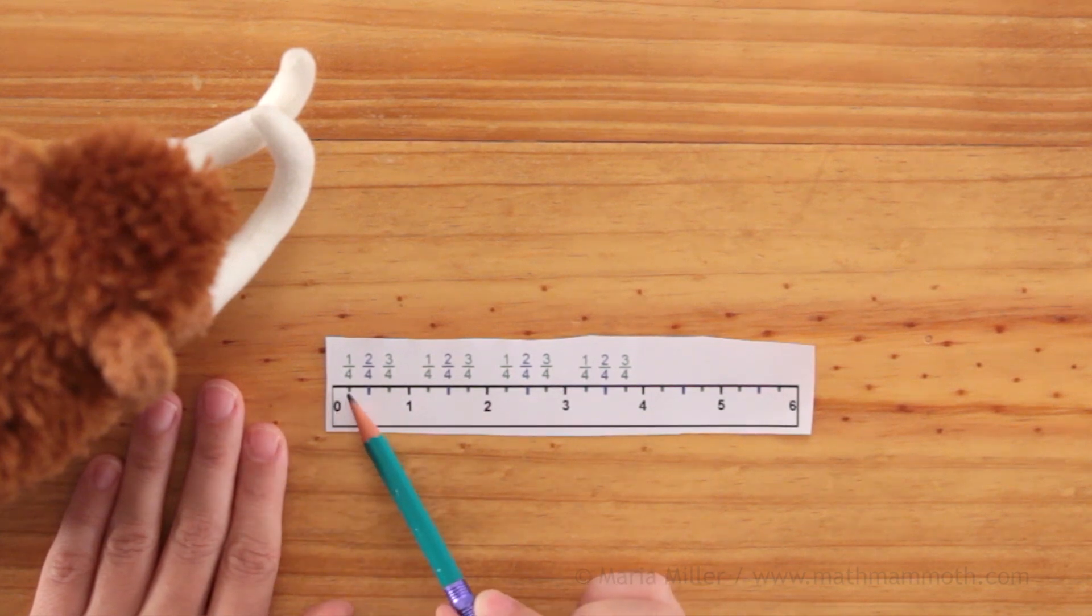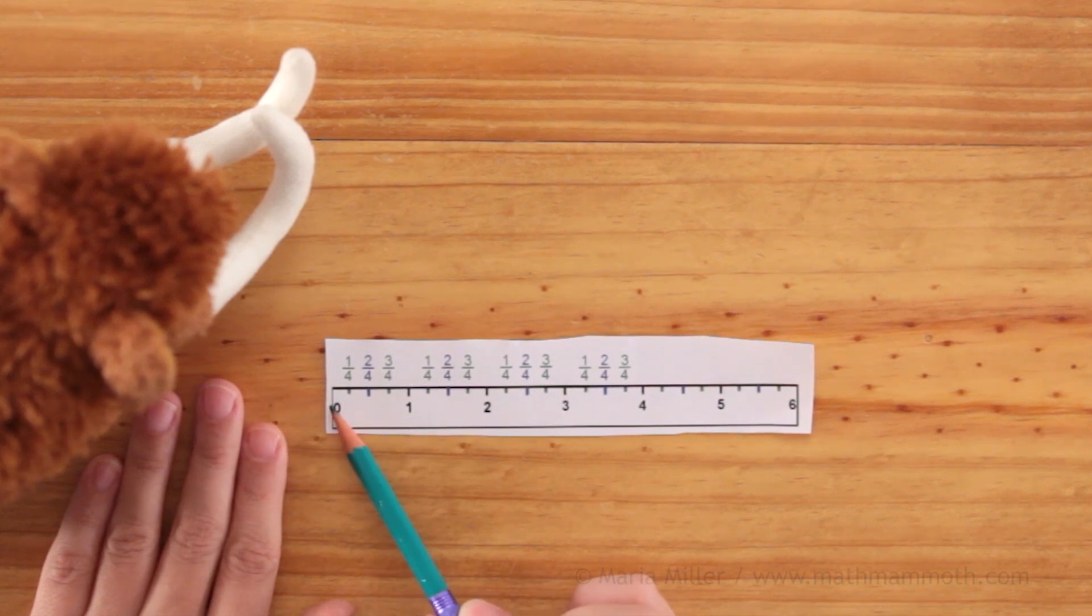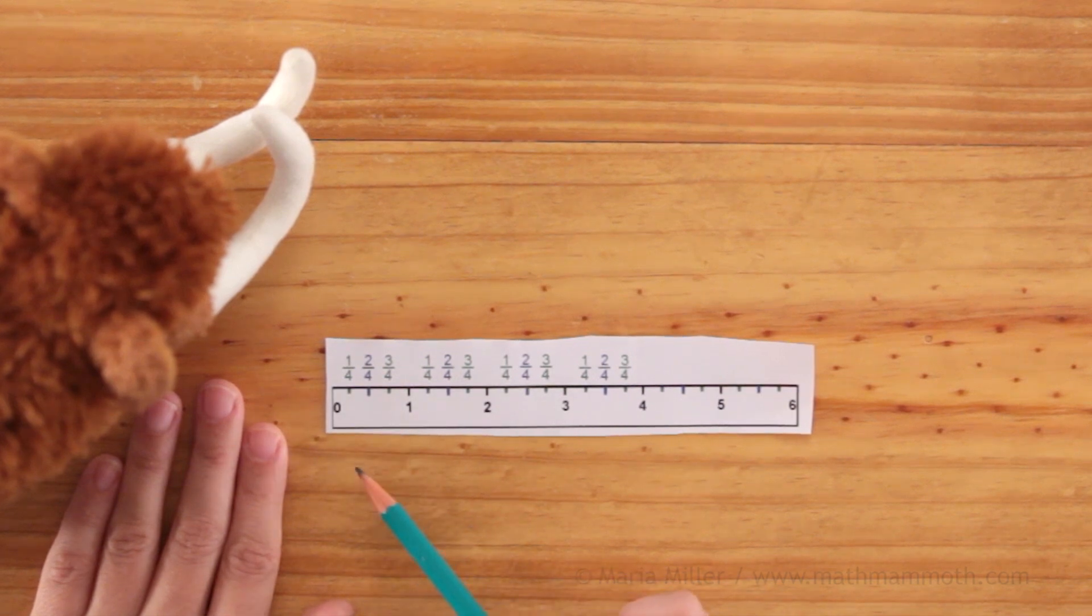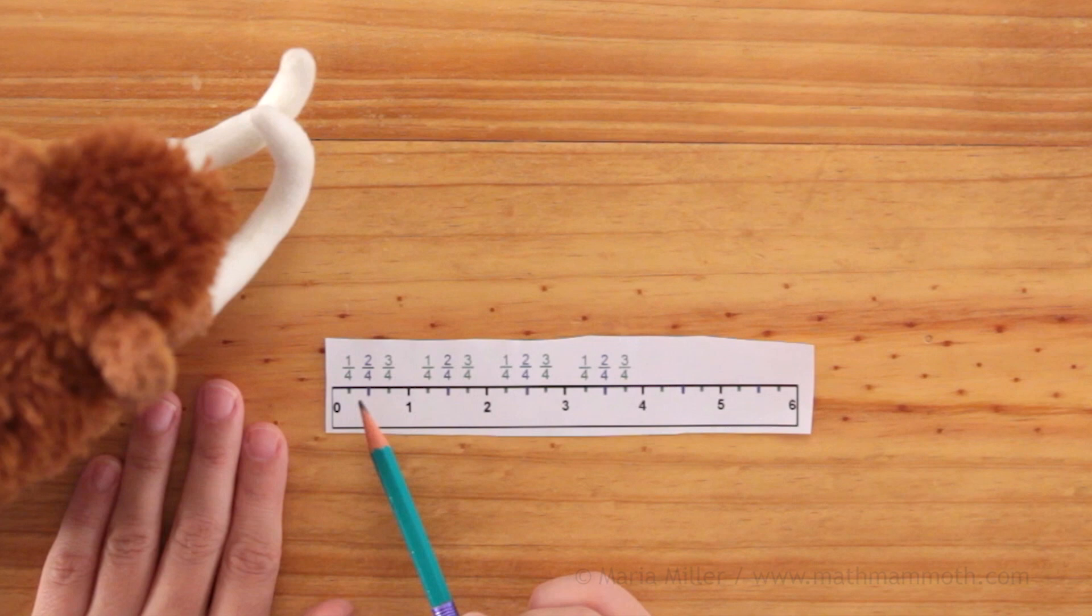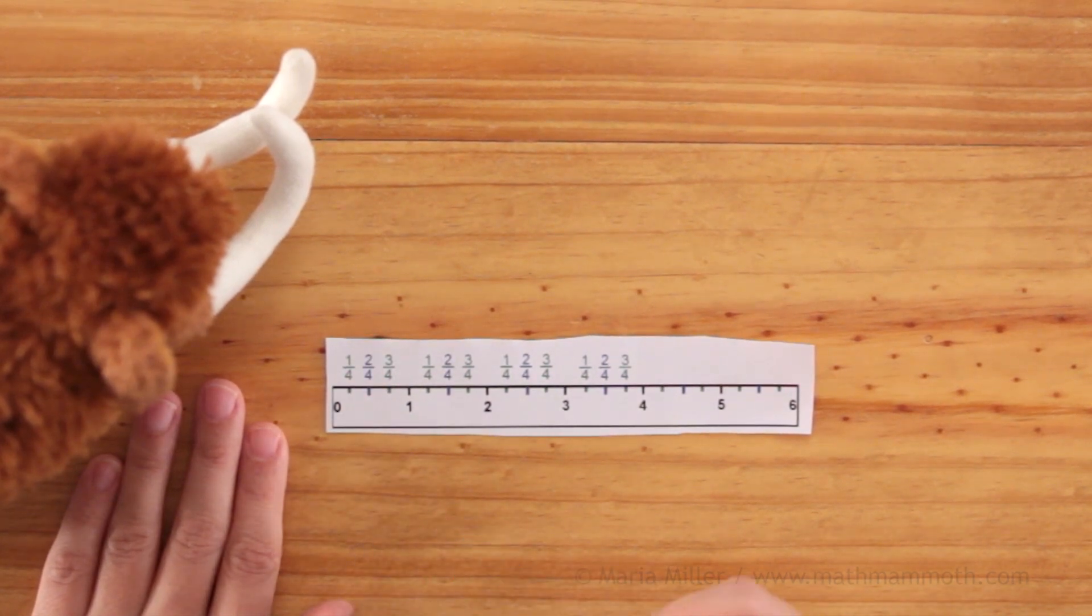And so the first mark here would signify to us one-fourth of an inch. From zero to here would be one-fourth of an inch. And then the blue mark is actually the halfway point between zero and one inches. So I marked here two-fourths but it is also one-half.